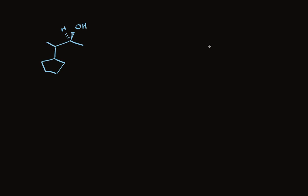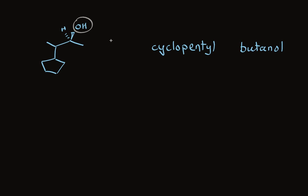Here's an interesting case. The hydroxyl group is the only functional group and therefore the highest priority. There's a four-carbon chain that contains it, and a five-carbon ring attached. We treat the ring as a substituent and name this a four-carbon chain — butanol. The single substituent is the cyclopentyl group, placed out in front. We number the chain from the end closest to the functional group: the hydroxyl is on carbon 2, making it 2-butanol, with the cyclopentyl group on carbon 3.